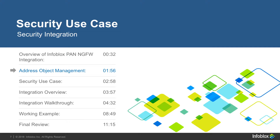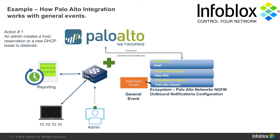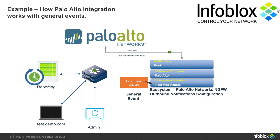Let's look at the first use case, where Infoblox can add new address objects to an object list on the PAN side. An admin creates a host, a reservation, or a new DHCP lease is obtained. This causes the ecosystem templates to be triggered, sending information to the PAN about the host, reservation, or DHCP lease that was just created. Finally, the host is added to an address group object, which you can use to create custom policies.